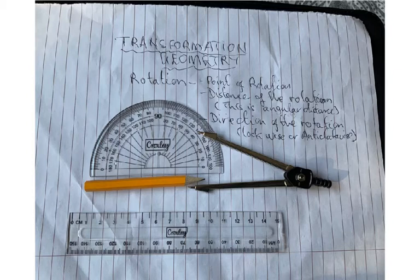There will be some questions on rotation, so you'll probably be given a Cartesian system with a triangle and asked to rotate it to find its image after undergoing a particular rotation about a certain center, through a certain number of degrees, either clockwise or anticlockwise. Let us look at how we work that out.